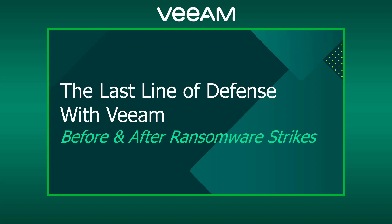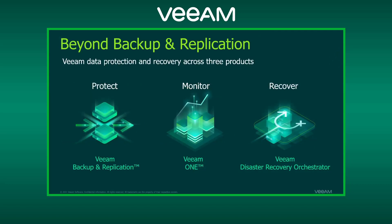Now let's talk about what to do before and after ransomware strikes using Veeam as the last line of defense. Veeam Backup and Replication is our flagship product — it does backup, replication, and continuous data protection, which is near-zero RPO replication. We also have Veeam ONE for monitoring and analytics of both your VMware and Veeam environments, and Veeam Disaster Recovery Orchestrator for automated DR planning and testing. Let's go through a workflow of protecting your VMs using all three products to build the bigger picture.